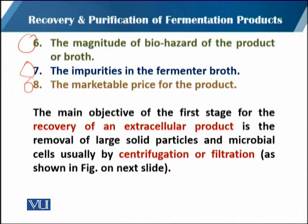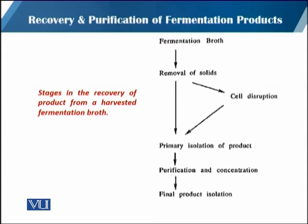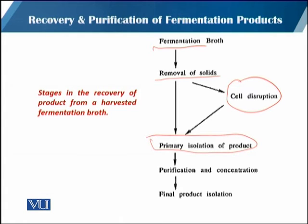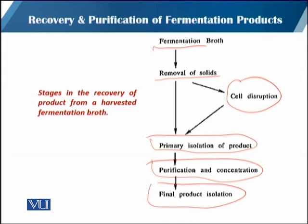The main objective of the first stage for the recovery of an extracellular product is the removal of large solid particles and microbial cells, usually by centrifugation or filtration. Starting from the fermented broth, solids are removed. If the product is intracellular, cell disruption is required; if extracellular, primary isolation is followed by purification and concentration — the secondary and tertiary processes — and then final product isolation, packaging, and shelf life control.